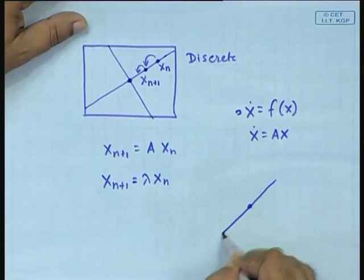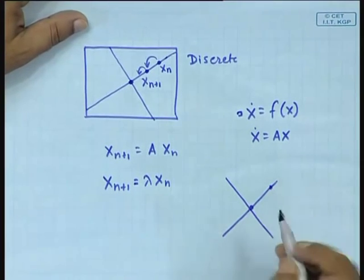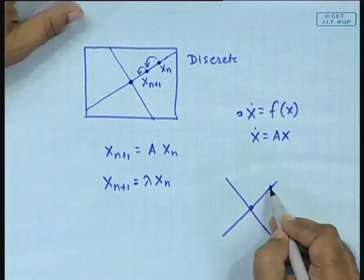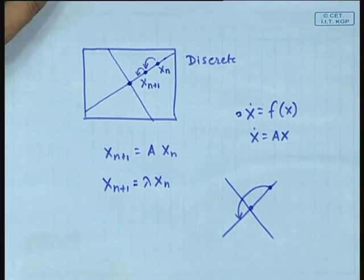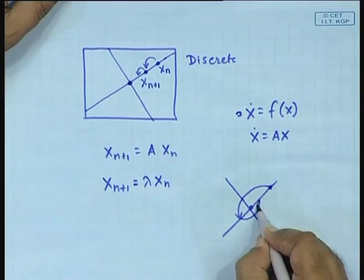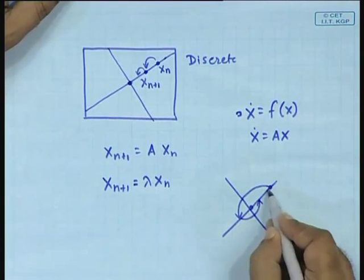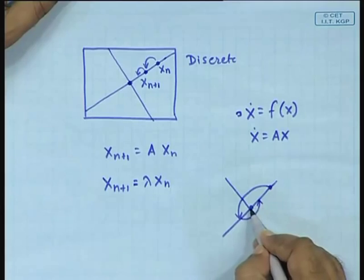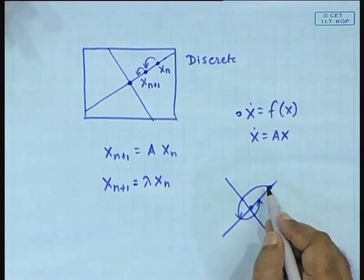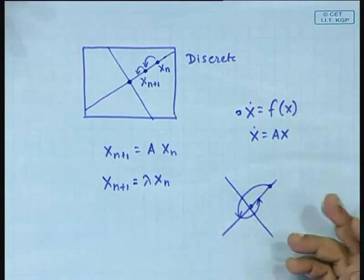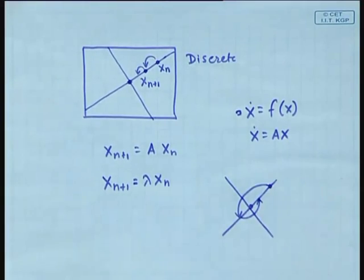Notice an important difference from continuous time dynamical systems, where we required the eigenvalue to have negative real part. Here the condition is that the magnitude of the eigenvalue should be less than 1. If it is negative, the iterate goes to the other side, toggling between two sides, but as long as the magnitude is less than 1 it still converges — so the condition is simply that the magnitude should be less than 1.